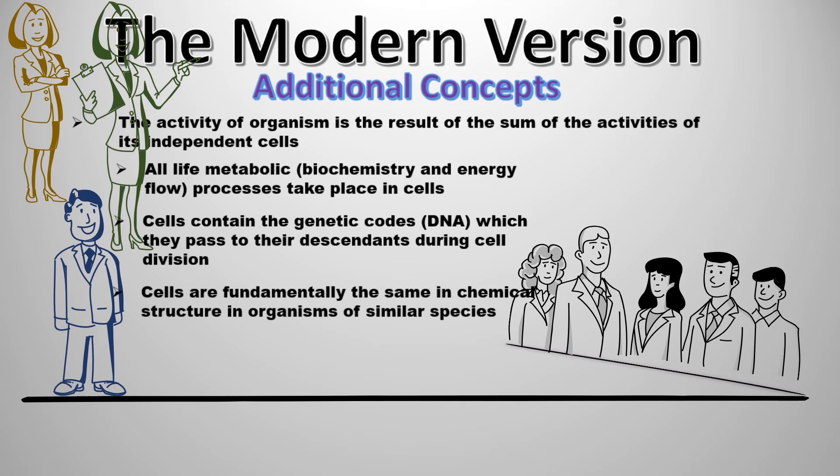The third statement is that cells contain the genetic code — the DNA — which they pass to their descendants during cell division. The fourth and final statement is that cells are fundamentally the same in chemical structure in organisms of similar species.